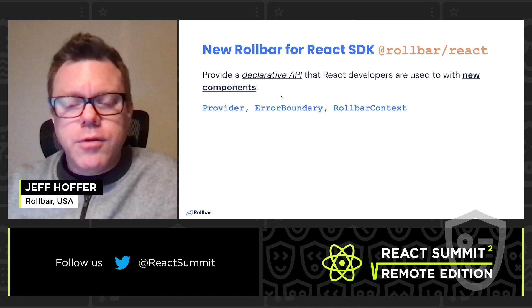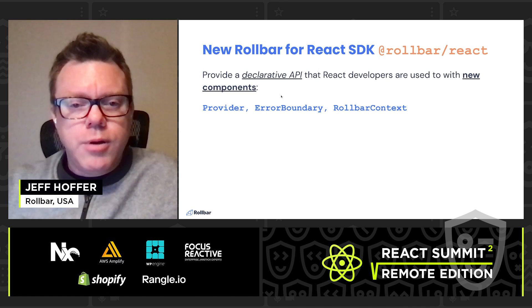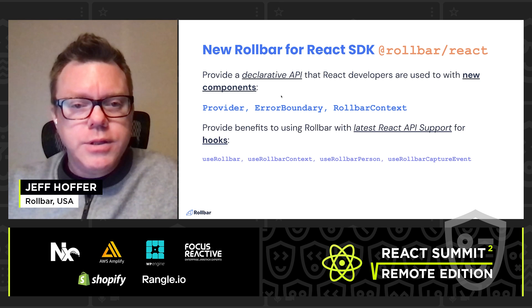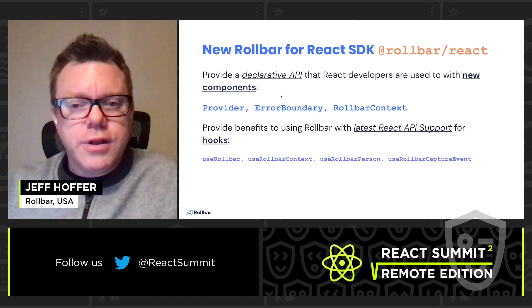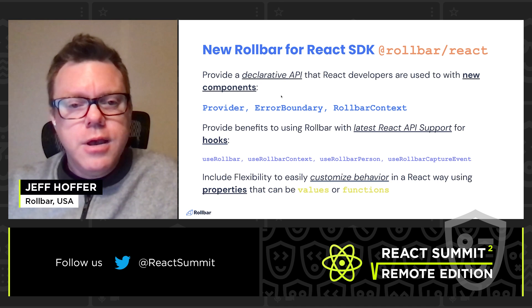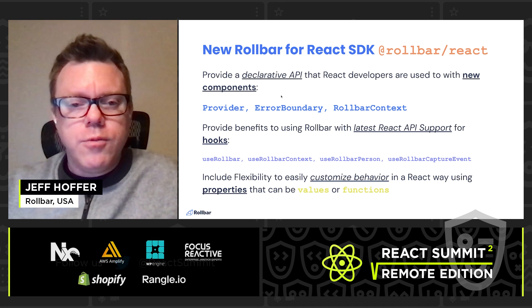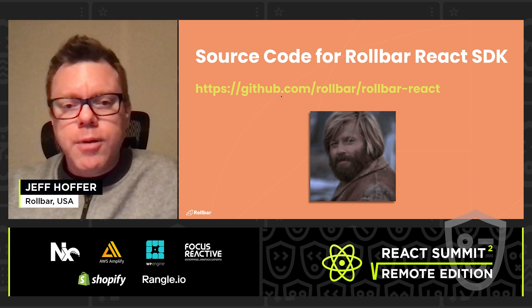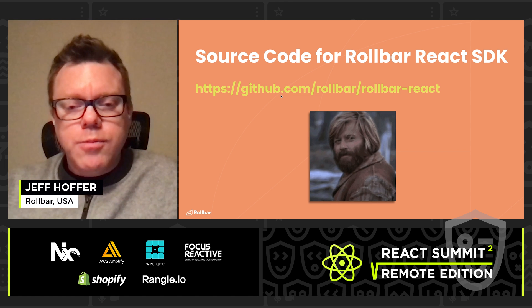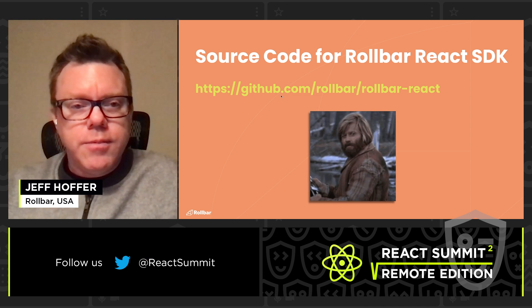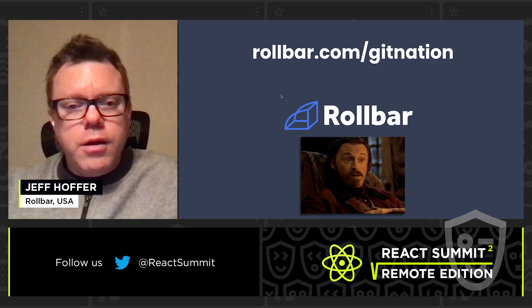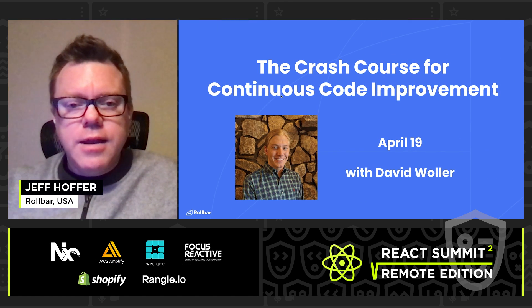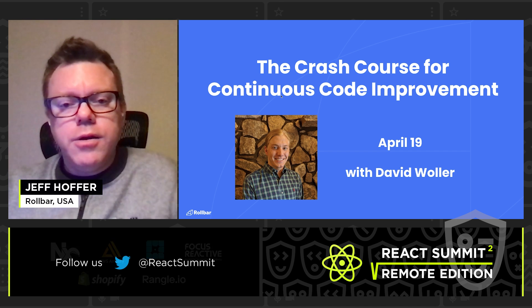I hope you enjoyed this first ever tour of the new Rollbar for React SDK, which allows you to use Rollbar the React way you're used to developing apps — the declarative API you're used to by using the provider, error boundary, and Rollbar context components, as well as the convenience of the new Rollbar React hooks. You can find the source code for the Rollbar React SDK on GitHub. As with all Rollbar products and open source SDKs, we're looking for your feedback. Please use the URL here with the GitNation promo code when signing up for Rollbar to get a free full month beyond the normal trial period. And please attend David's amazing workshop on April 19th, where he'll get you fully signed up and integrated with a deep dive on many of Rollbar's features.